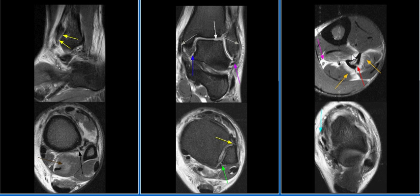There is a minimally displaced oblique fracture of the fibular diaphysis. There is strain of the lateral and the posterior compartment muscles.